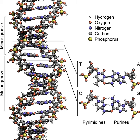In eukaryotes, this structure involves DNA binding to a complex of small basic proteins called histones, while in prokaryotes multiple types of proteins are involved. The histones form a disc-shaped complex called a nucleosome, which contains two complete turns of double-stranded DNA wrapped around its surface. These non-specific interactions are formed through basic residues in the histones making ionic bonds to the acidic sugar-phosphate backbone of the DNA and are therefore largely independent of the base sequence. Chemical modifications of these basic amino acid residues include methylation, phosphorylation, and acetylation. These chemical changes alter the strength of the interaction between the DNA and the histones, making the DNA more or less accessible to the transcription factors and changing the rate of transcription.